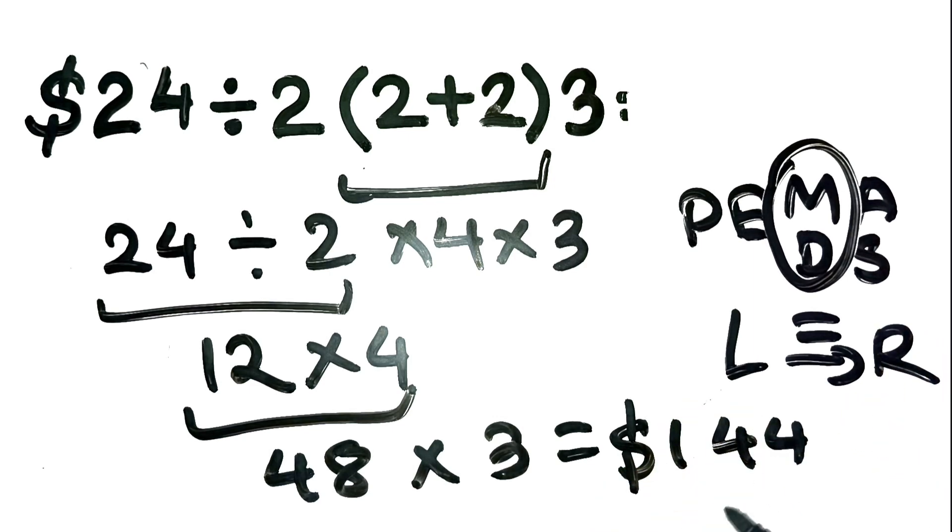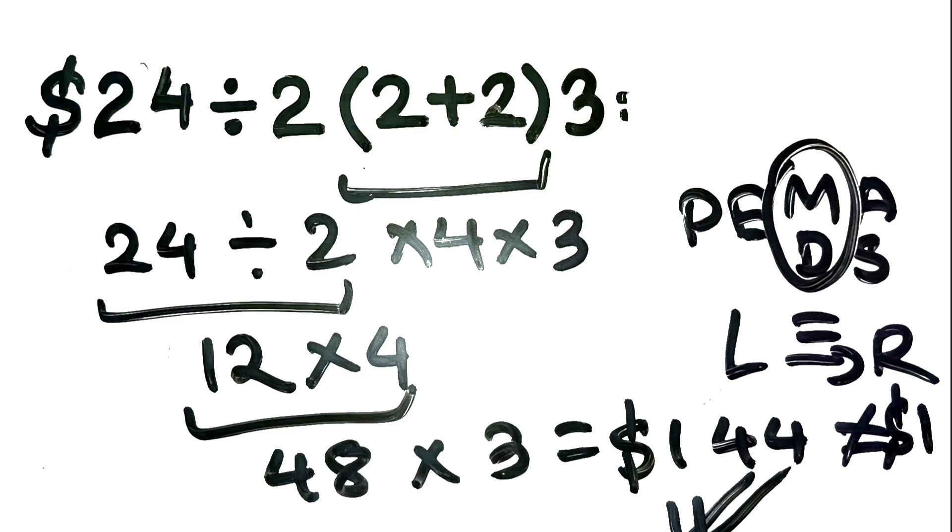So the correct answer is $144, not $1. And if you got that wrong, you're not alone. Even people in finance sometimes overlook left to right operations when things look too simple.